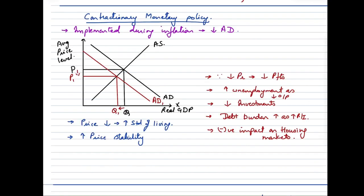So contractionary monetary policy is the exact opposite of expansionary monetary policy. And this policy is implemented when the economy is very much heated or when the economy is facing an inflationary situation. The main aim of implementing this policy is to bring down the aggregate demand. So when a contractionary policy is implemented, we see that the aggregate demand is shifting towards the left, so the price level is coming down from P to P1 and the quantity or real GDP is also reducing from Q to Q1.